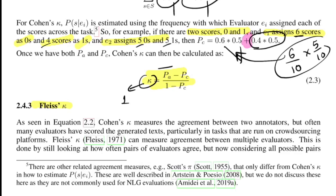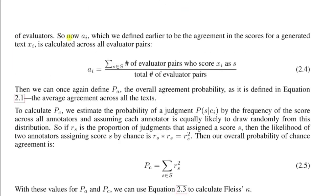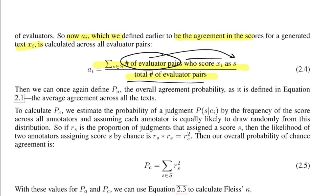Fleiss' Kappa extends Cohen's Kappa to handle multiple evaluators, not just two. This is mostly used in crowdsourcing platforms like Mechanical Turk. The agreement score ai for text xi is calculated by forming all pairs of evaluators and, for each score s, summing the agreement counts and dividing by the total number of evaluator pairs. The probability of agreement is then the average of ai across all texts, as in Equation 2.1.